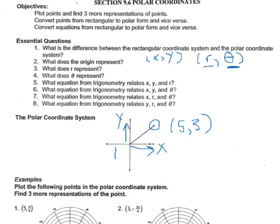What does the origin represent? The origin in a polar coordinate means that we moved zero on a radius and we've moved zero degrees, so you can imagine it as the center of a circle. r represents the radius and theta represents an angle that we are moving along. We can convert coordinates from rectangular to polar by using equations that relate trigonometry to rectangular coordinates.